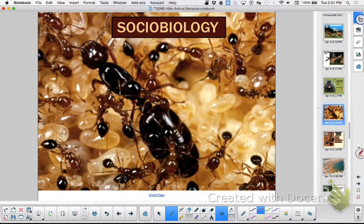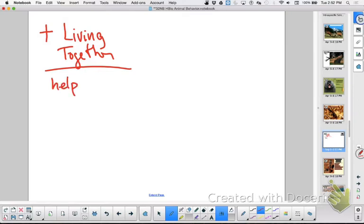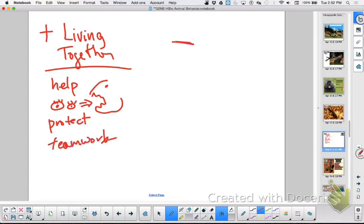That leads us then to sociobiology. In sociobiology we talk about organisms living together. What is the plus of living together? What could be the benefit of living together? You raise young, so you can help raise young. More eyes to look around, lots of eyes to look around. Protection, protect because you fight together. Teamwork. Looking for predators.